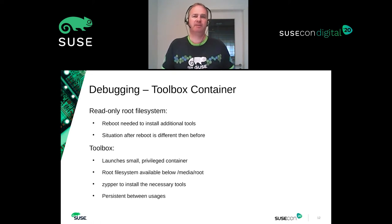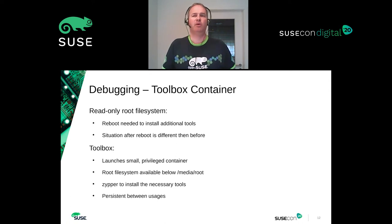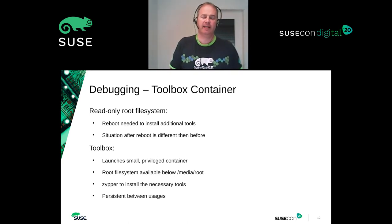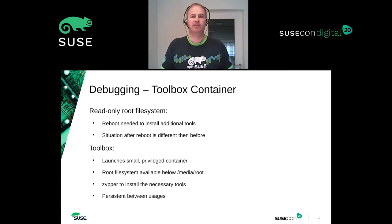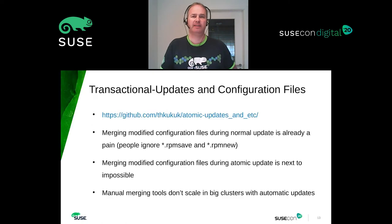We have a toolbox utility and a toolbox container for these reasons. You can launch a small privileged container in which you can install with zypper all the tools you need. If they are not available in the OpenSUSE repositories, you can add devel or other repositories you want. The container is persistent between usages as long as you don't delete it. From this container, with all the debugging tools you need, you can access the system root file system and log files mounted below /media/root.